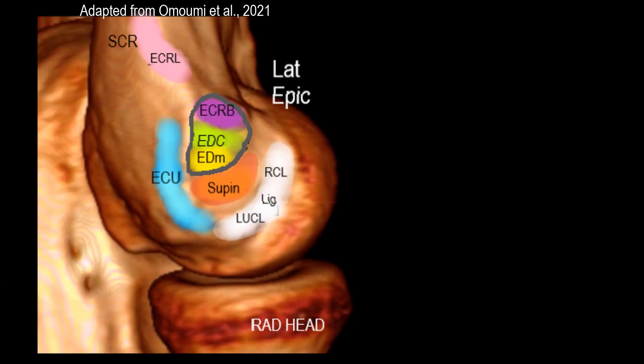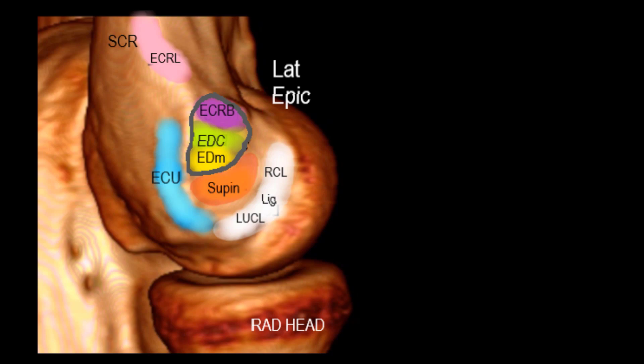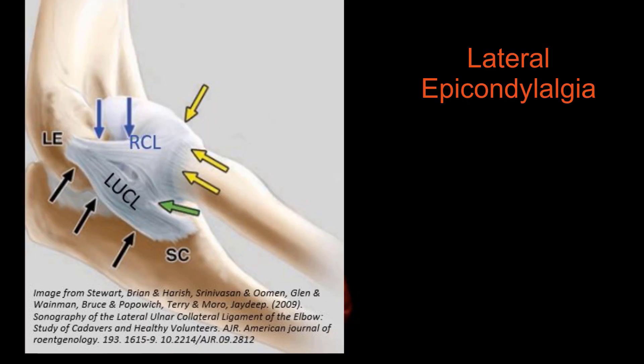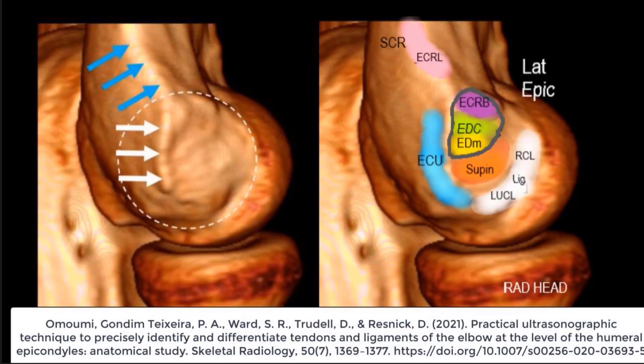In this live scan video we'll be having a look at some of the lateral elbow structures involved in the genesis of pain. One of the main culprits is the common extensor tendon and its component tendons — we're going to divide it into thirds today. There's also the underlying lateral ligament complex, the synovial plica, the joint capsule, and intra-articular causes that we need MRI for.